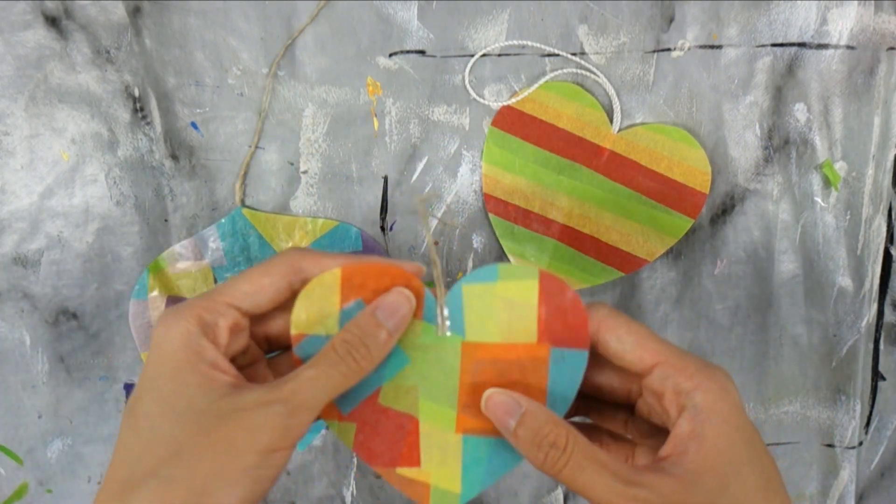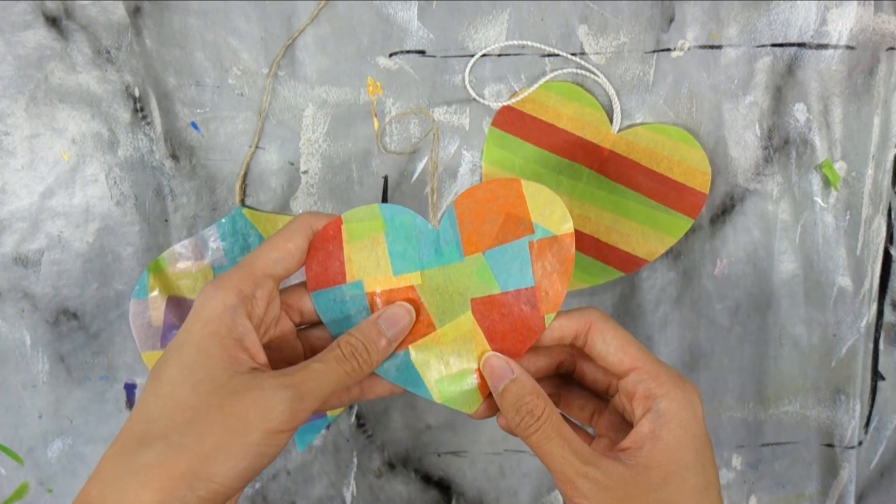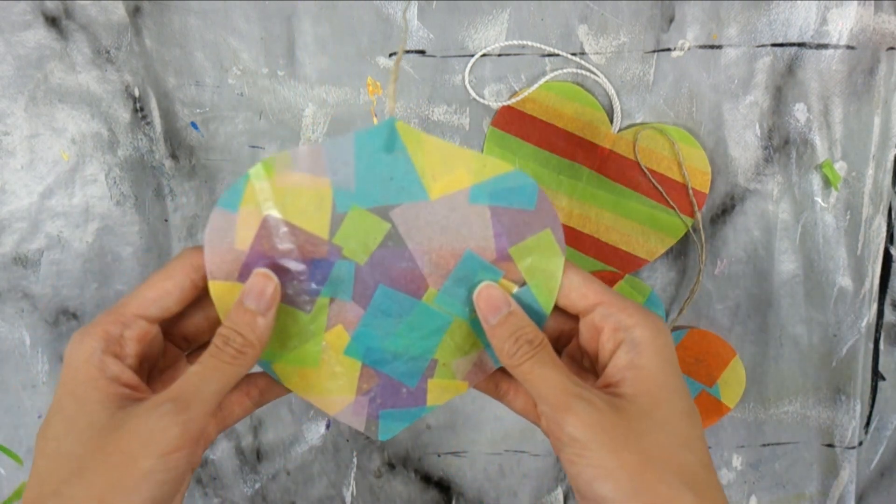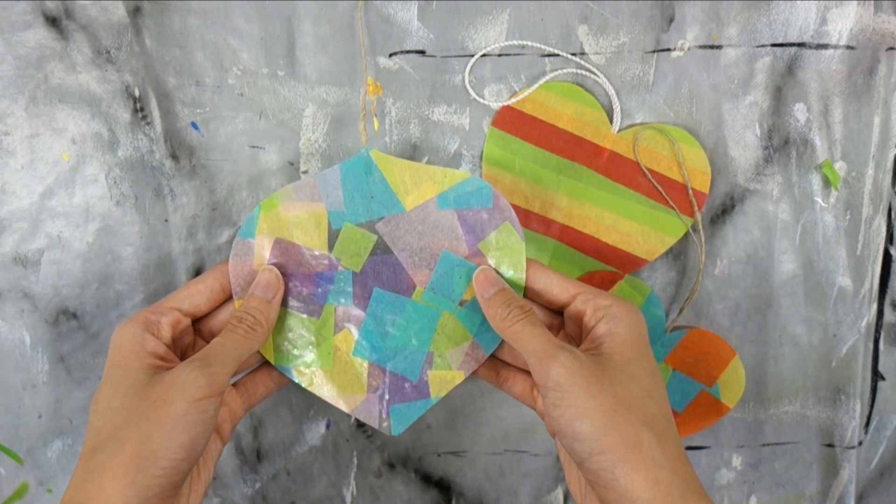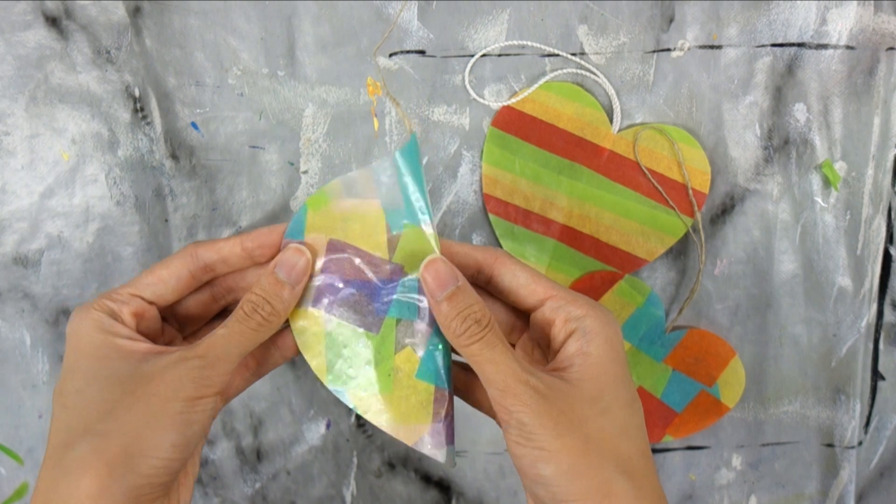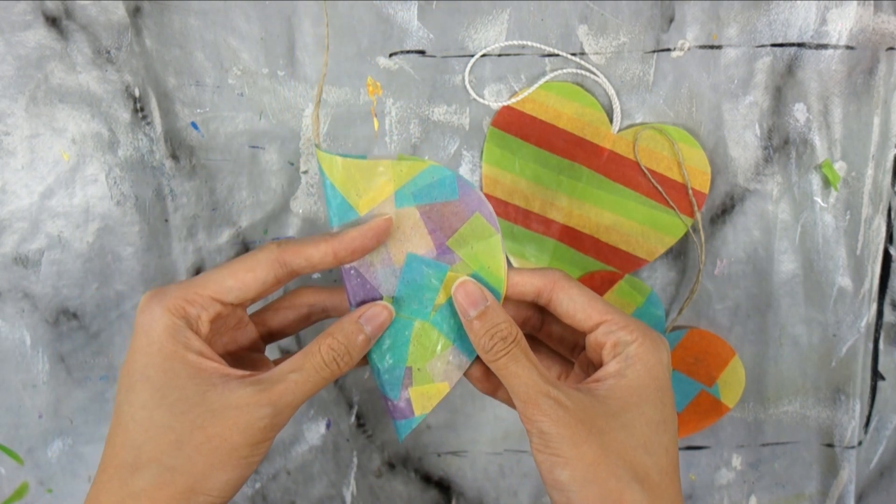Here are some examples of more sun catchers. This one was done with tissue paper squares instead of strips. This one was made by folding it in half and cutting out a round shape with points at both ends. So you end up with an ornament shape.